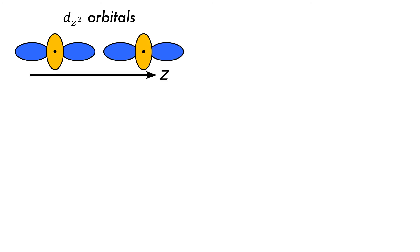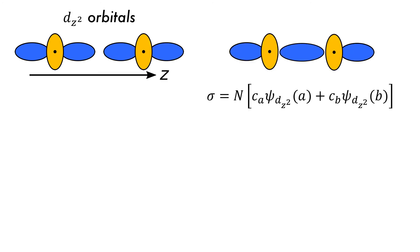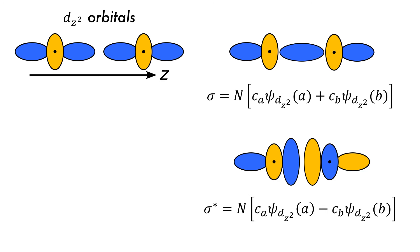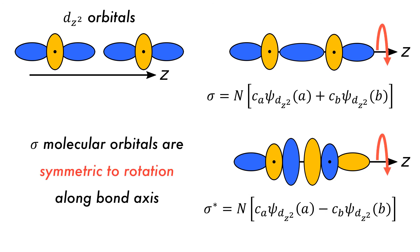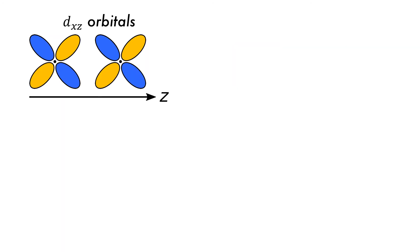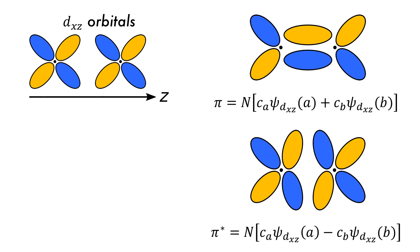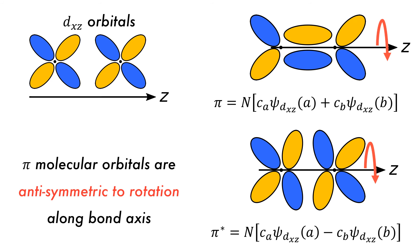Whilst there are five d-orbitals, only some of their combinations will result in molecular orbitals. The dz² orbitals can combine to form sigma bonding and sigma-star antibonding orbitals, because they are symmetric to rotation along the bond axis. The dxz atomic orbitals can combine to form pi bonding and pi-star antibonding molecular orbitals, because they are anti-symmetric to rotation along the bond axis, as they have a phase change where yellow becomes blue and vice versa.